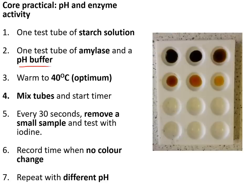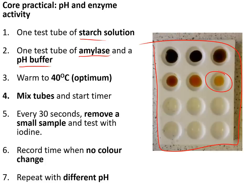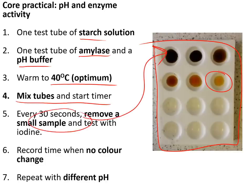The core practical on enzymes involved testing the effect of changing pH on the rate that amylase could digest starch, monitored using iodine solution — iodine turns black in the presence of starch. We took a test tube of starch, a test tube of amylase, and a pH buffer, and warmed them to 40°C in a water bath. We mixed the tubes and started the timer. Every 30 seconds we took a sample and put it into a spotting tile well of iodine. If it went black we continued; if it stayed the orange-brown colour of iodine, all the starch had been digested and we stopped the timer. We repeated this with different pH buffers.